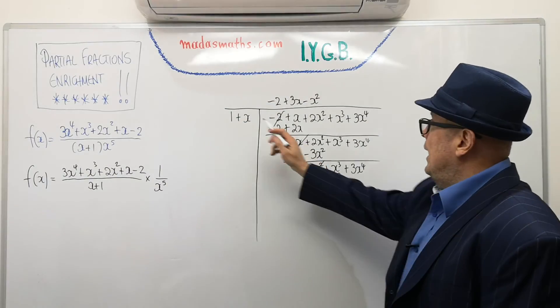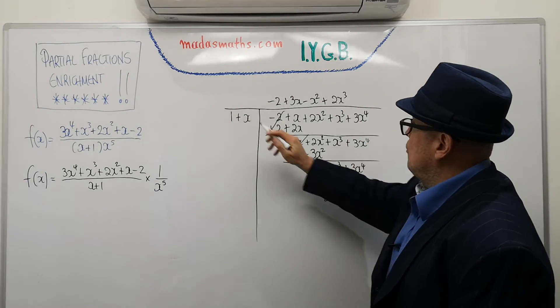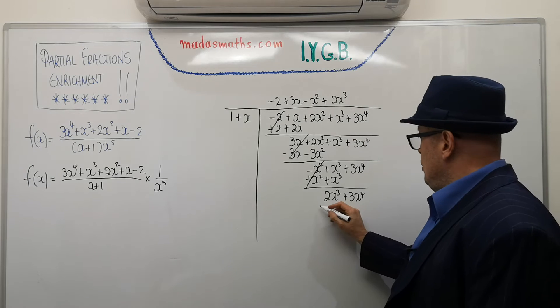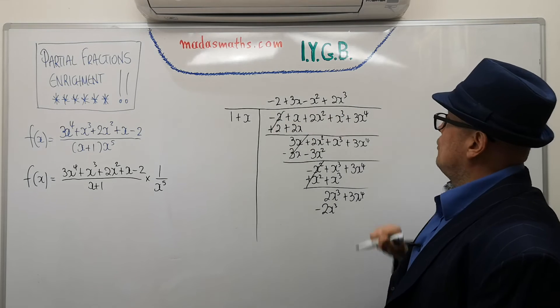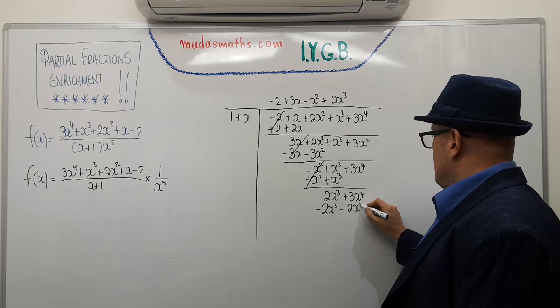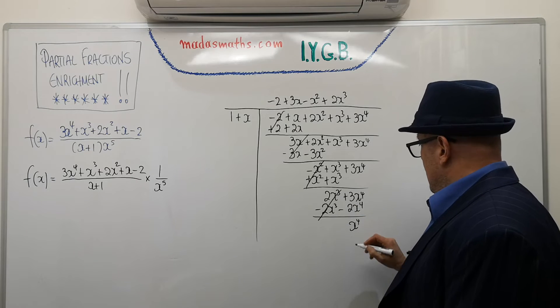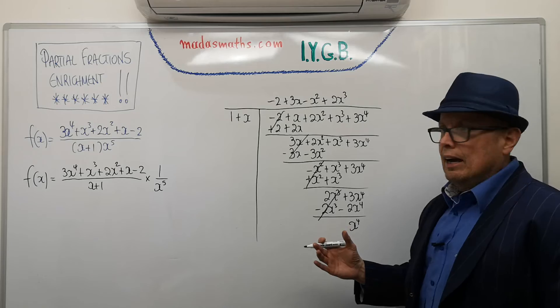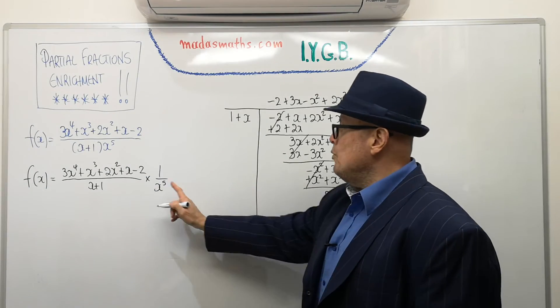Okay. 1 into 2x cubed, it goes, of course, 2x cubed times. 1 times 2x cubed, 2x cubed minus 2x cubed. x times 2x cubed is 2x to the 4 minus 2x to the power of 4. This will cancel. And I've got x to the 4. This is, if you want, my remainder for what I've got in here. But I want to continue. I want to continue one more step.